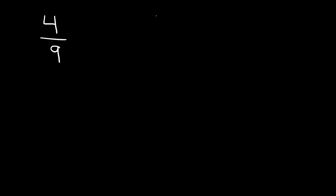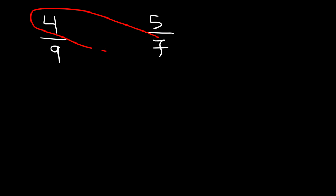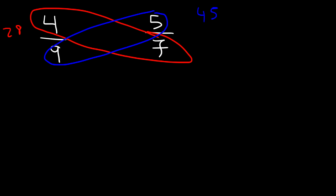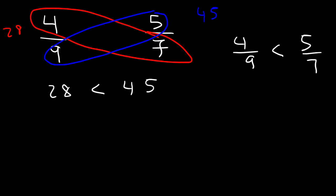Here's another example — try this problem: 4 over 9 and 5 over 7. Use the cross multiplication technique, and then confirm your answer by getting common denominators. First, let's multiply 4 by 7: 4 times 7 is 28. Then we'll multiply 9 and 5, which is 45. So 28 is less than 45. Therefore, 4 over 9 is less than 5 over 7.